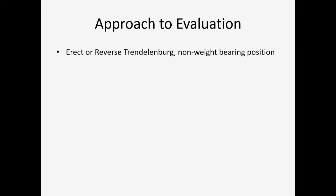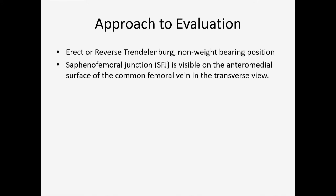The primary approach to evaluation is that flow is from distal to proximal, but the evaluation needs to be proximal to distal because proximal veins are bigger and easier to see. Most importantly, it's the two junctions where evaluation should start. The patient needs to be in an erect or reverse Trendelenburg, non-weight-bearing position. I cannot stress enough the importance of starting from the junction to look for the valve.